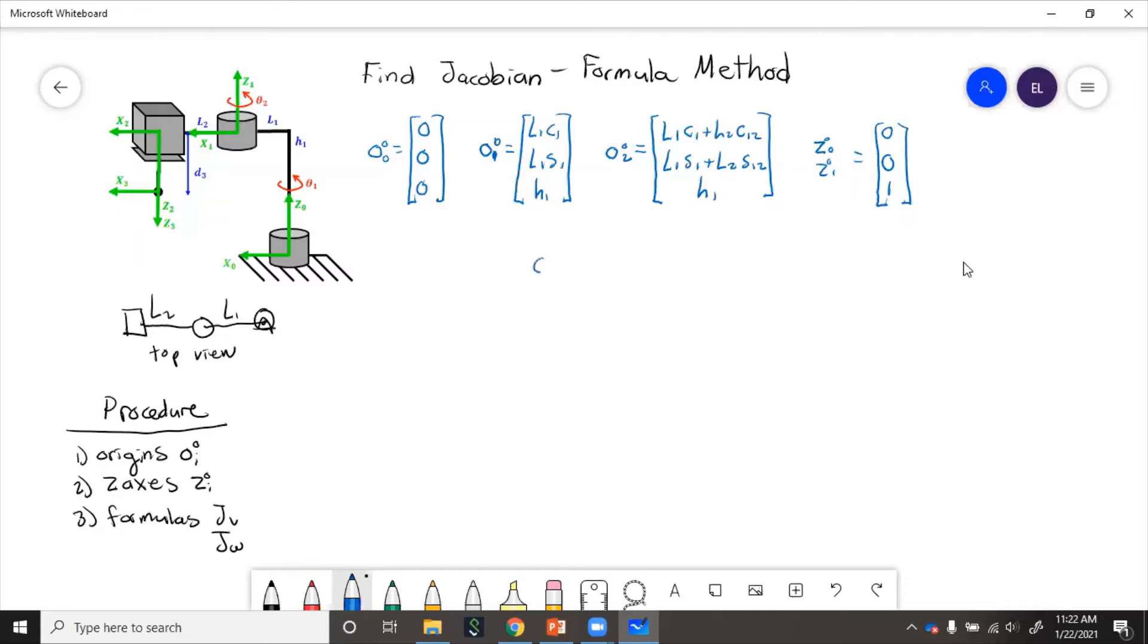Now for origin three, the height is going to be h1 minus d3 because it's going down. Other than that, it's the same as the origin for joint two.